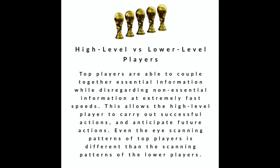High-level players can couple together essential game cues and essential information while disregarding all the non-essential information, and they do this at extremely fast speeds in their subconscious mind. The conscious mind is far too slow to process information in a game like soccer quickly enough. These high-level players have a great deal of experience that allows them to process information in the soccer domain at these fast speeds. The lower-level player tends to focus on non-essential cues, which causes them to process information too slowly, resulting in giving the ball away and making poor decisions.